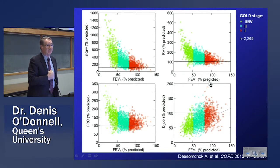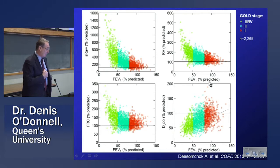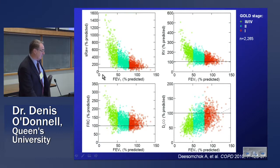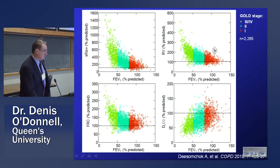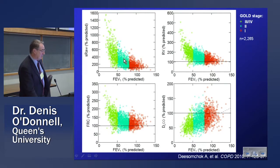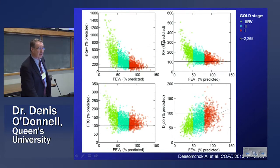This is a simple cross-sectional study from our lab that reminded me how incredibly heterogeneous this disease is from a physiological point of view. On the x-axis, you have FEV1 with increasing airway obstruction to the left, and on the y-axis we have airways resistance, residual volume, FRC, and DLCO. The horizontal lines are the 100% predicted line. The color codes relate to GOLD 1, GOLD 2, and GOLD 3-4 in light green. For any given FEV1, there's a huge variation in all of these physiological parameters, so the FEV1 really gives us little information about the complex physiology of the disease.